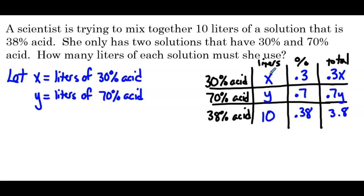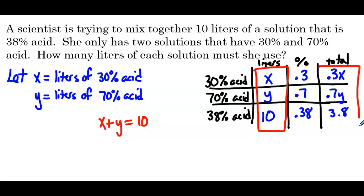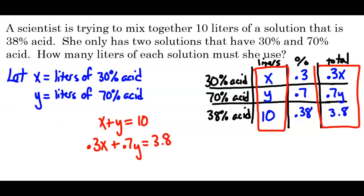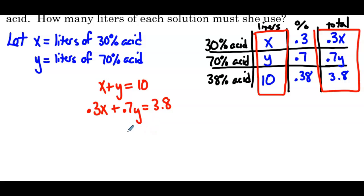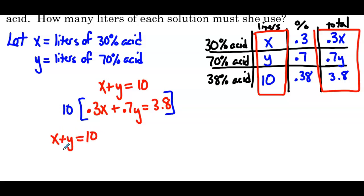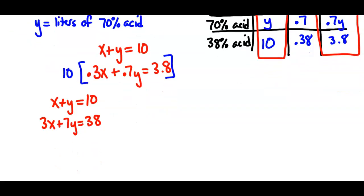The two equations we get — because we have two variables, we need two equations to create our system — from the amount column we get x plus y equals 10, and the last column gives us 0.3x plus 0.7y equals 3.8. This system could be solved using either elimination or substitution. Most of the time we're going to eliminate the decimal first, so let's multiply the second equation by 10. The new system is x plus y equals 10, and 3x plus 7y equals 38. Let's solve this one with elimination.